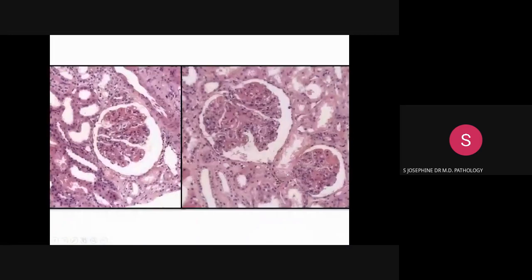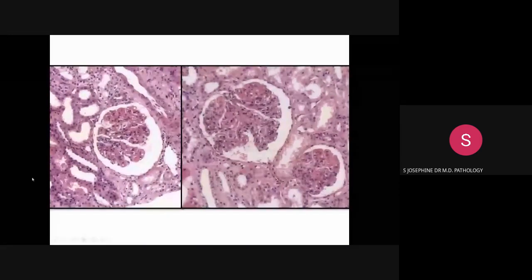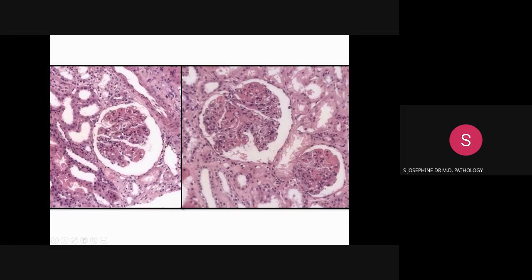This is the higher-power view of the glomeruli, which shows the characteristic capillary wall thickening referred to as wire looping. It is caused by the sub-endothelial immune deposits, which are completely involving the peripheral circumference of the glomerular capillary. We can see the rigid, ectatic, thickened capillary walls here.